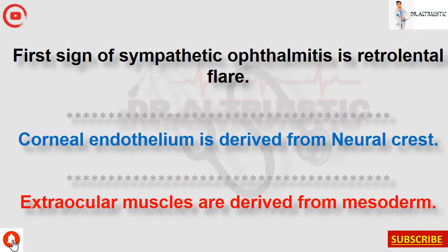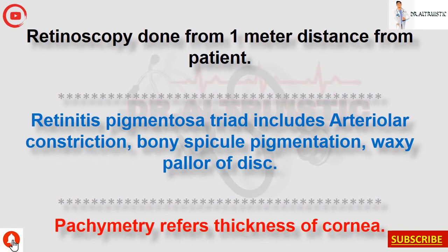First sign of sympathetic ophthalmitis is retrolental flare. Corneal endothelium is derived from neural crest. Extraocular muscles are derived from mesoderm. Retinoscopy is done from one meter distance from the patient.